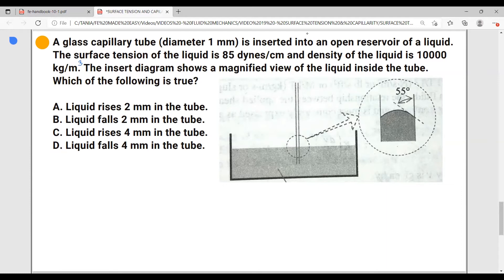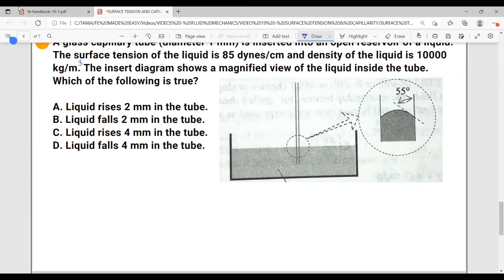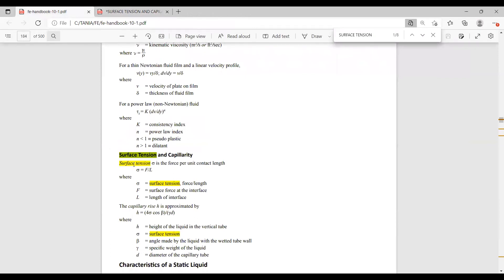Let's go back to our FE handbook and find the formula for the capillary tube. And if you've noticed, it is right here next to the surface tension. Capillary rise h equals 4 times surface tension times cosine of the angle made by the liquid with the wetted tube wall, over the specific weight of the liquid times the diameter of the capillary tube. So let's write this formula down and see if we have everything we need to solve this problem.